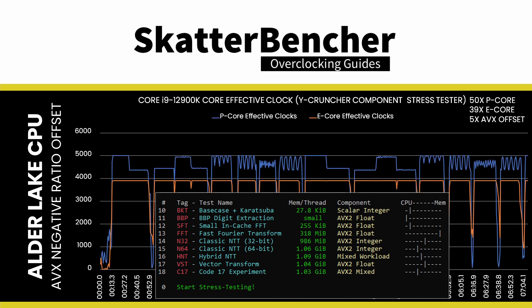Then we used HardwareInfo to monitor the effective clock during the benchmark. During the YCruncher workloads, we see that during the BKT, the P core effective clock frequency is 5 GHz. Since this is a non-AVX workload, it's as expected. Then there are two AVX workloads, BPP and SFT, where the P core effective clock drops to 4.5 GHz. This is expected as the 5 GHz P core frequency is reduced by 500 MHz due to the AVX offset. During the FFT workload, also AVX, the frequency is back to 5 GHz, so the AVX offset was not triggered. Then the next four AVX workloads — N64, HNT, VST, and C17 — bounce back and forth between offset and non-offset.